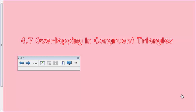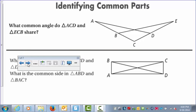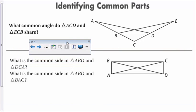Alright, today we are going to talk about 4.7 overlapping and concurrent triangles, and we're just going to continue our proof practice, but now the triangles will have some common part that will be overlapping. So first we're going to identify the common part.